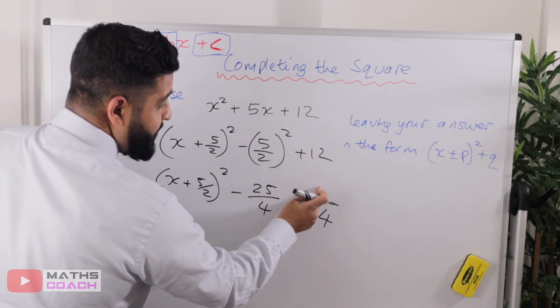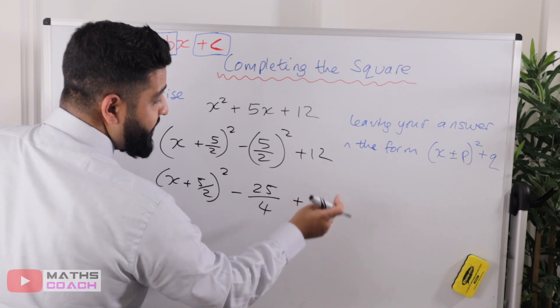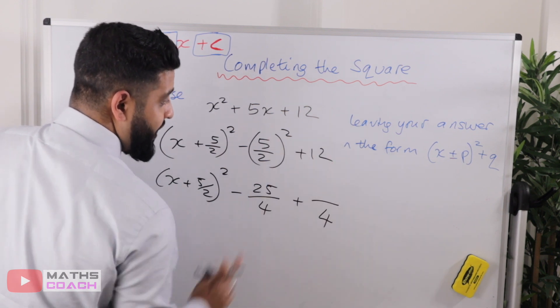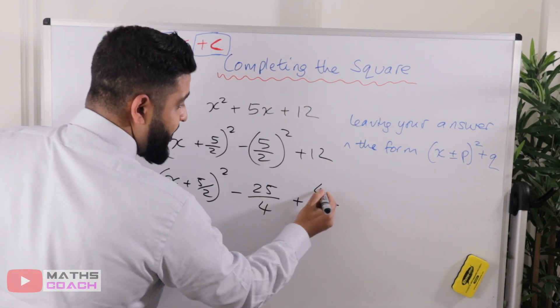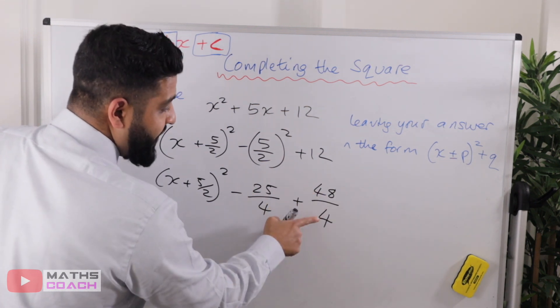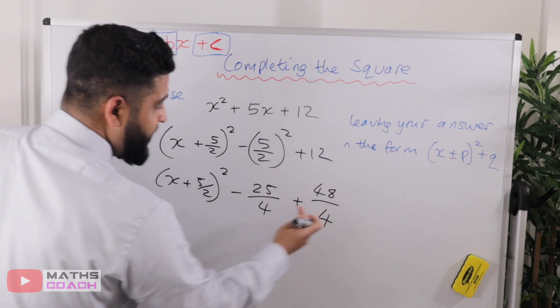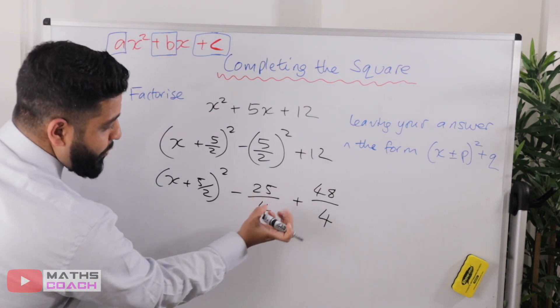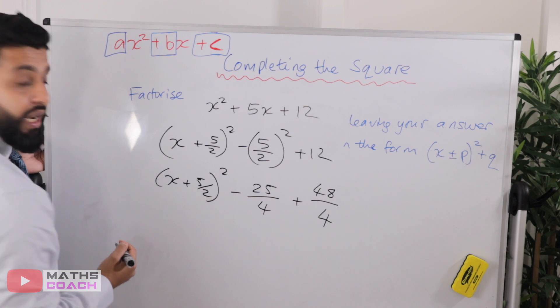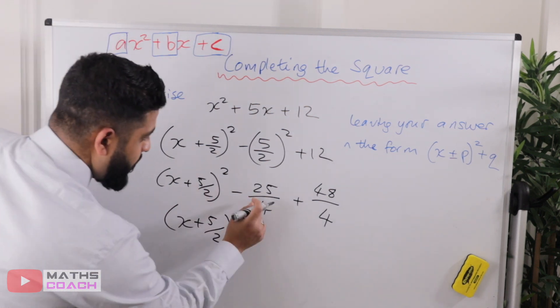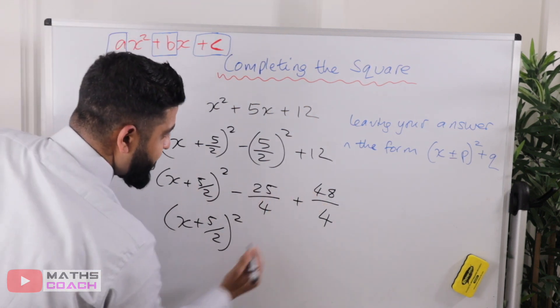So what would the top have to be so that something divided by four still gives us twelve? Yes, that's right. It's going to be forty-eight. 48 ÷ 4 is still twelve. That is twelve. But we're going to leave it like that just to help us collect those like terms.